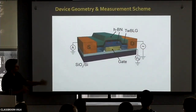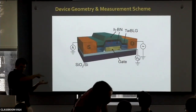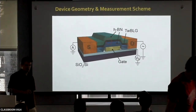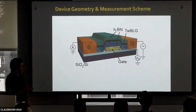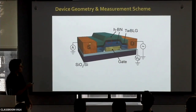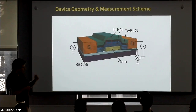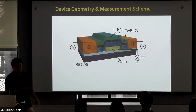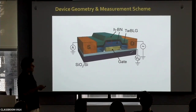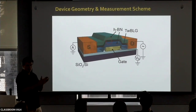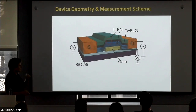After all this fabrication — which is standard except for this pick-up, tear, and pick-up step which is non-standard and only a few groups know how to do — we put source and drain contacts. We have our twisted bilayer graphene encapsulated in hexagonal boron nitride sheets. We also have one or two metallic planes used as plates of a parallel plate capacitor, so that by applying a gate voltage, we can accumulate charge in the graphene.